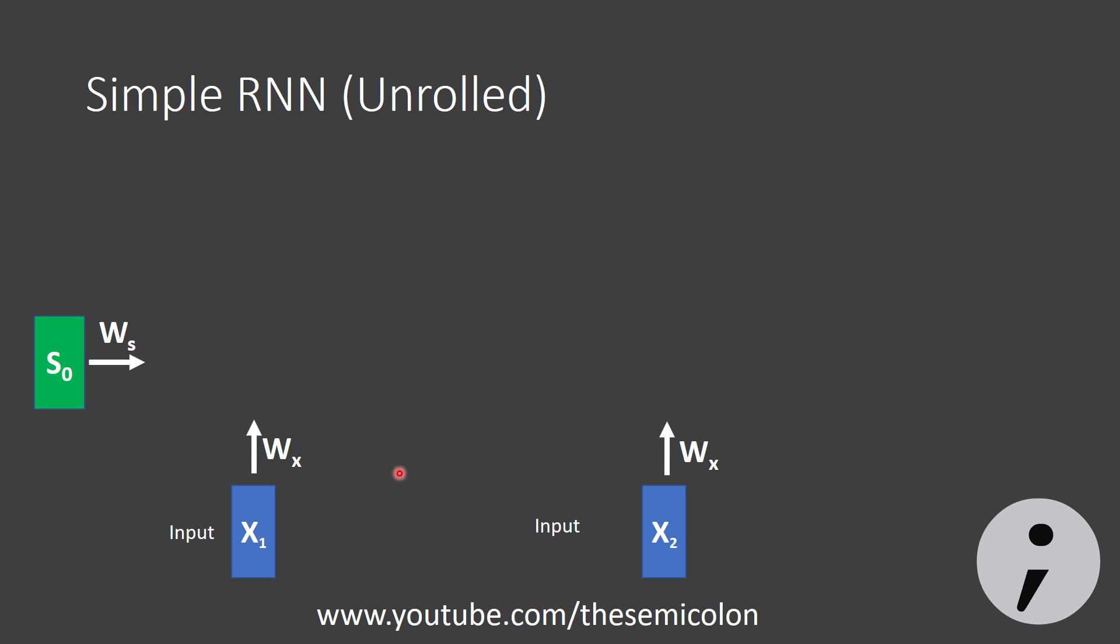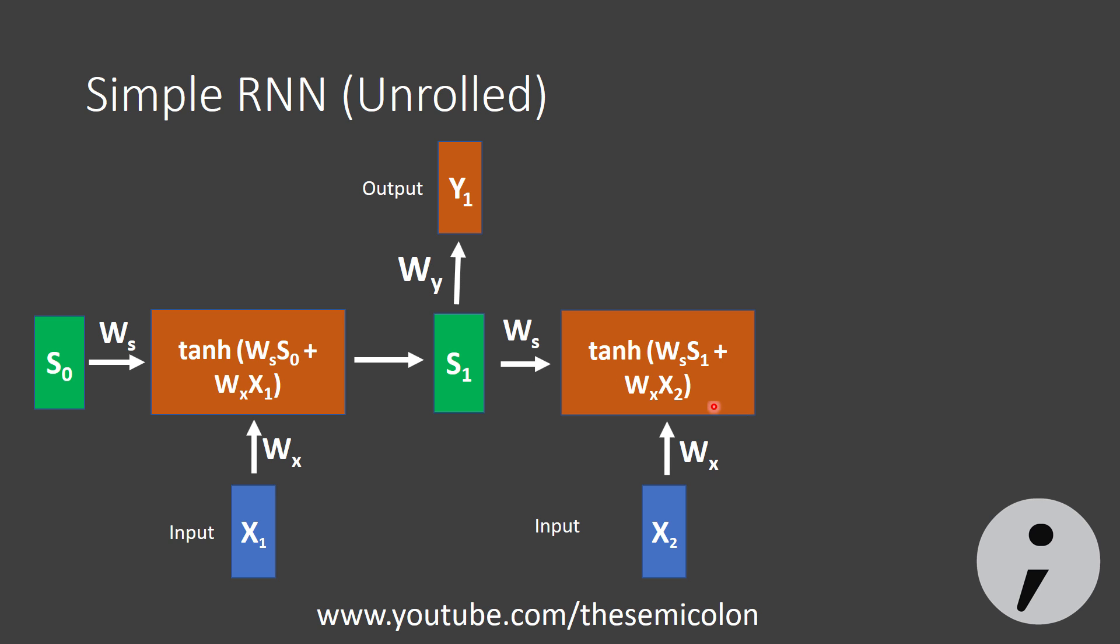We have a previous state, S0 and the input at time step 1 is x1 and we input this to RNN. The RNN calculates the new state based on this recursive formula and gives us the state 1, S1. And to get the output, we multiply S1 with WI. And the new state S1 and the input x2 are the inputs for the next time step. And we get S2. And we again get the output by multiplying it with WI. The same thing goes on for many time steps.